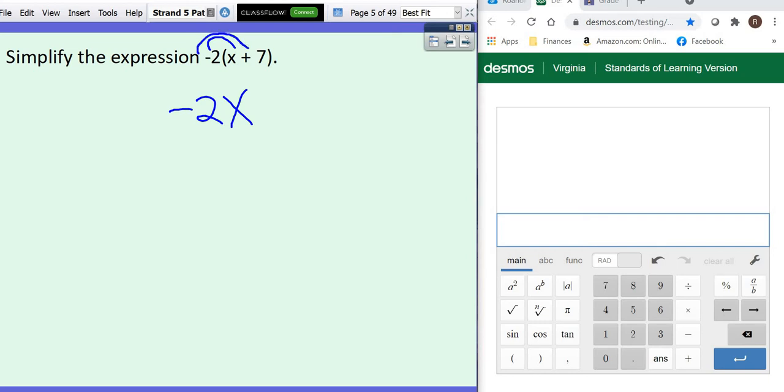Then a negative 2 times a positive 7 makes negative 14. So you have to make sure that you're using your signs. You can't leave anything like that out.